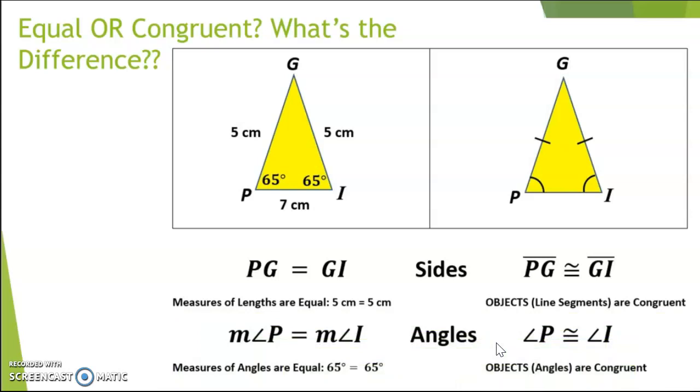What about the angles? The angles are going to work similarly. The M in front of the angle symbol represents the measure of angle P is equal to the measure of angle I, and again, I actually know what that measurement is, which is that 65 degrees is equal to 65 degrees.